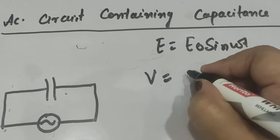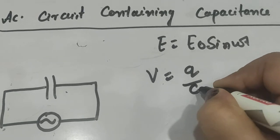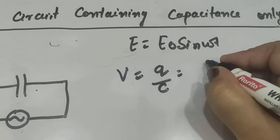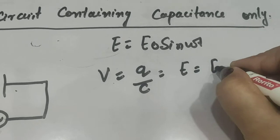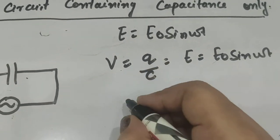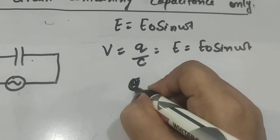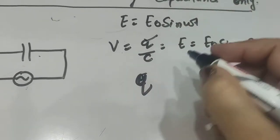...and which is given as V = Q/C, which is equal to E, which is equal to E₀ sin(ωt). So accordingly, this Q is equal to E₀C sin(ωt).